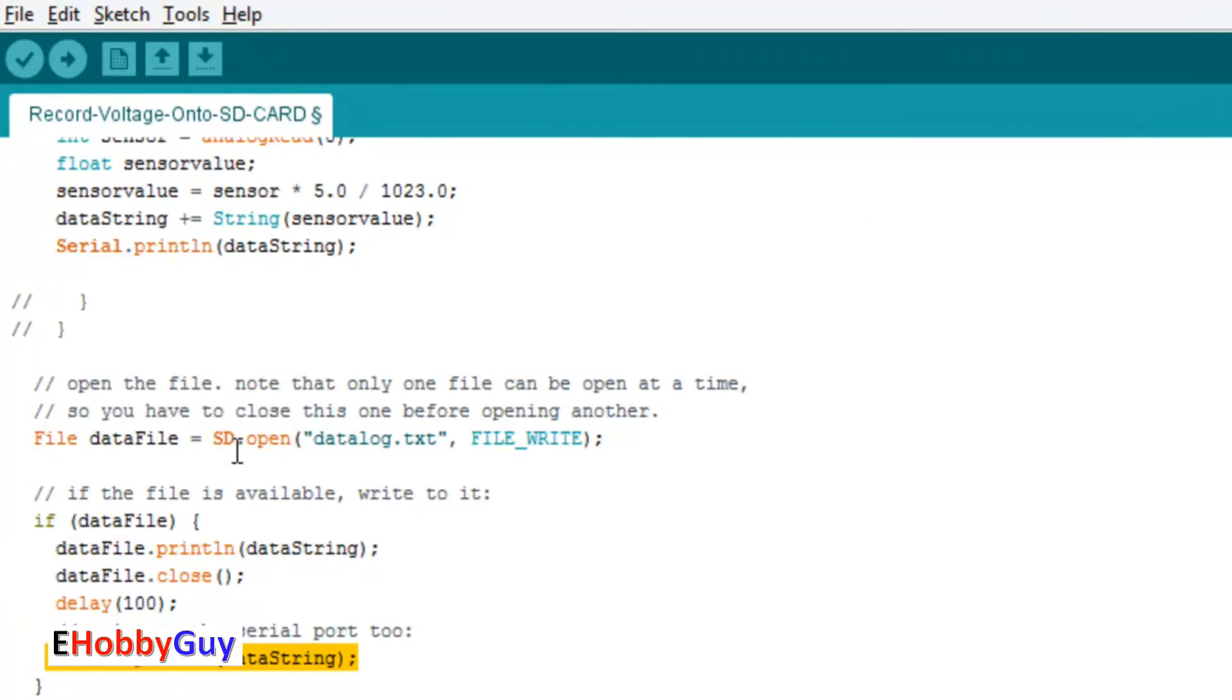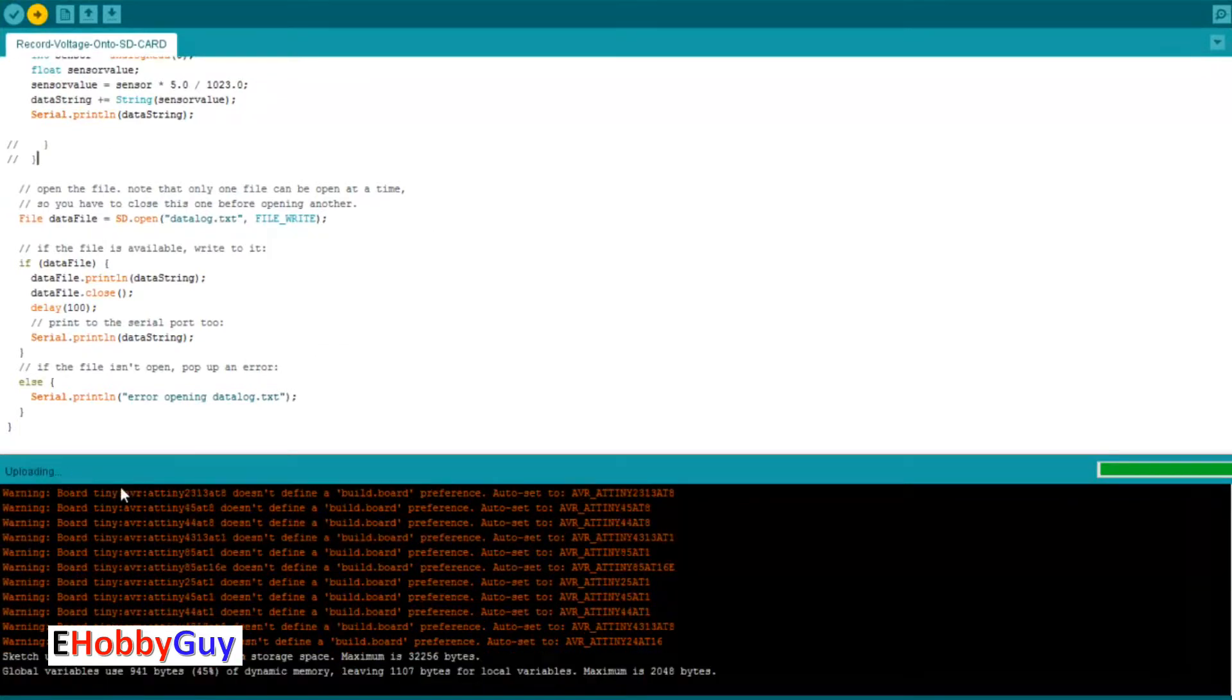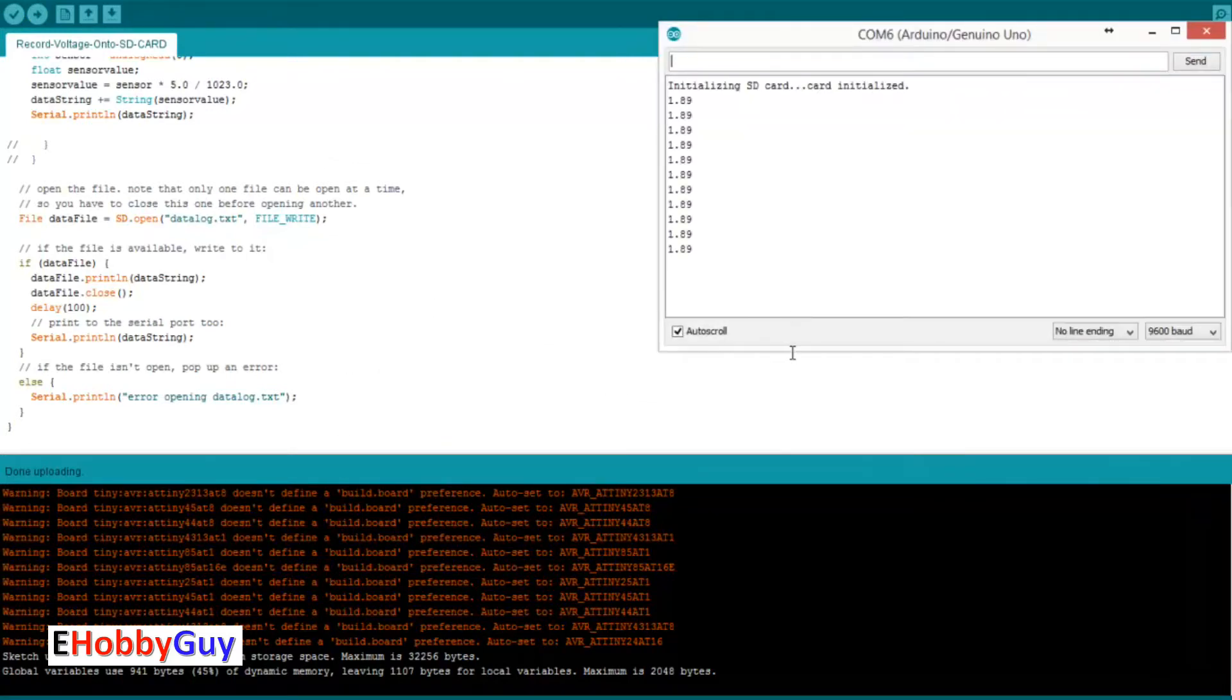Let's click upload here and upload this sketch. It's compiling, still uploading, done uploading. Now let's pop open the serial monitor and vary the voltage to see if we can get some values recorded.